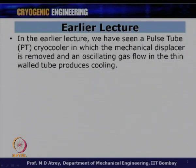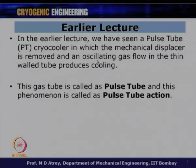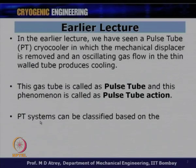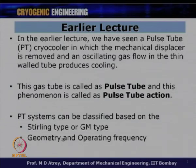Welcome to the thirty-first lecture of cryogenic engineering under the NPTEL banner. In the earlier lecture, we saw a pulse tube cryocooler in which the mechanical displacer is removed compared to GM and Stirling coolers. An oscillating gas flow in the thin-walled tube produces cooling — this is the pulse tube action. Pulse tube systems can be classified based on Stirling or GM type, geometry, operating frequency, and the kind of phase shift mechanism they incorporate.